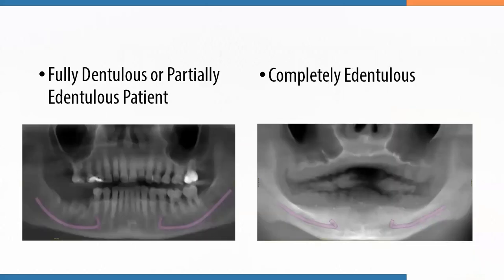The second information we need depends on the type of arch. We have two different scenarios. On the left-hand side, we've got a patient that comes in with a full set of teeth or partially edentulous. In this situation, you're going to be taking a Conebeam CT and an impression or an STL file of the arch of interest. Ideally we'd also have the opposing STL or impression and a bite, but it's okay to just have the patient's arch of interest.